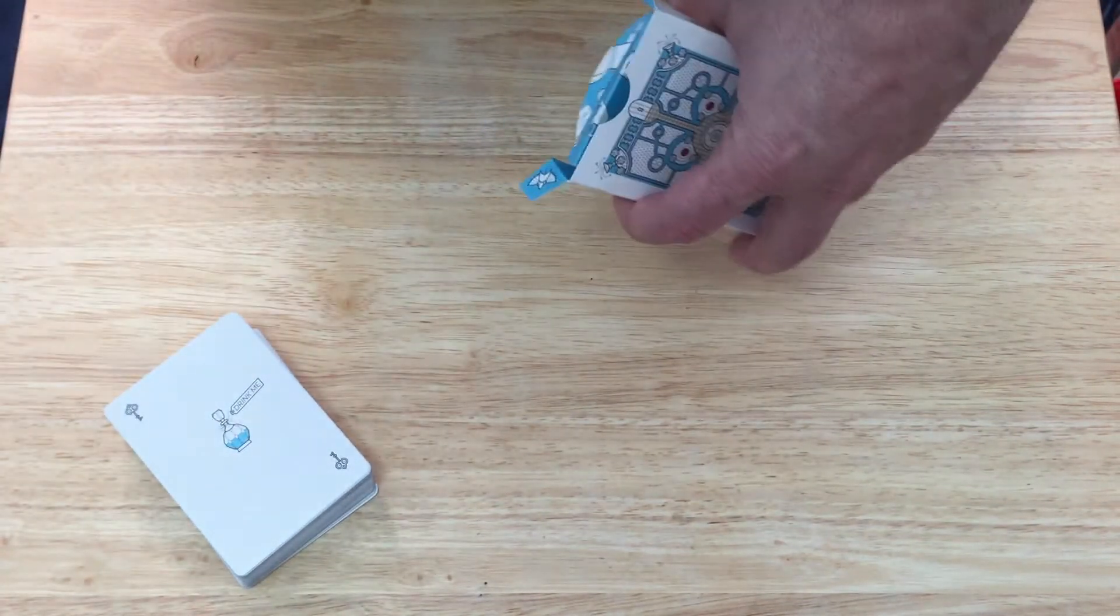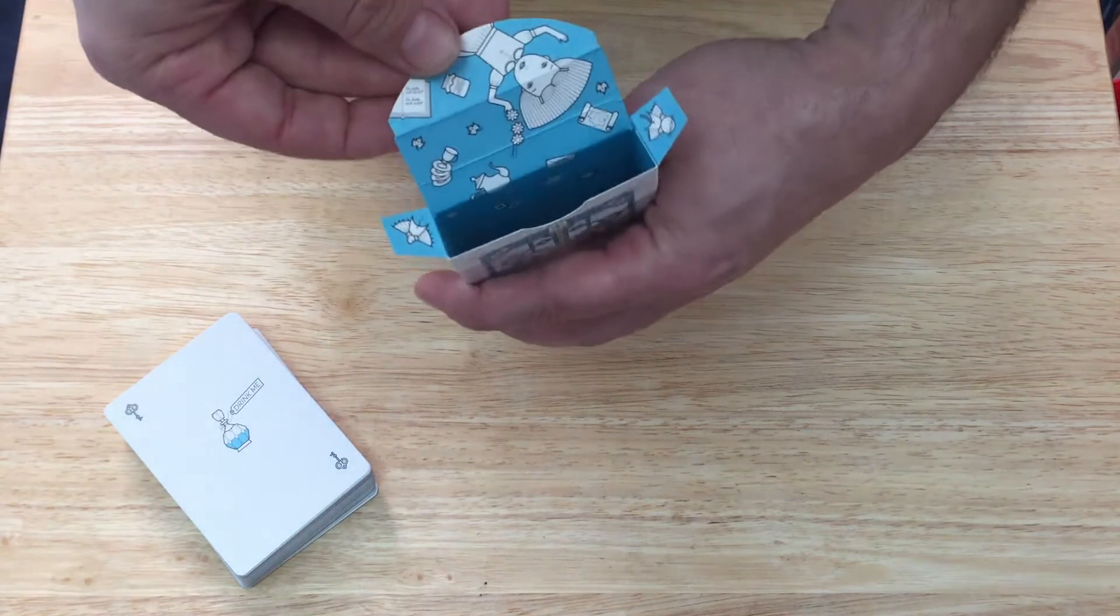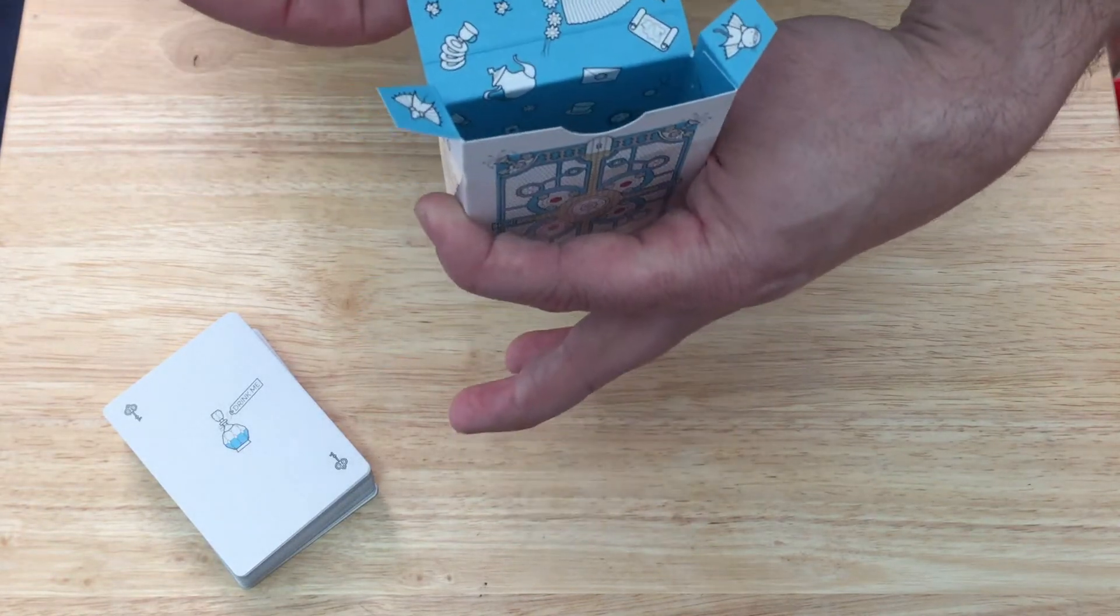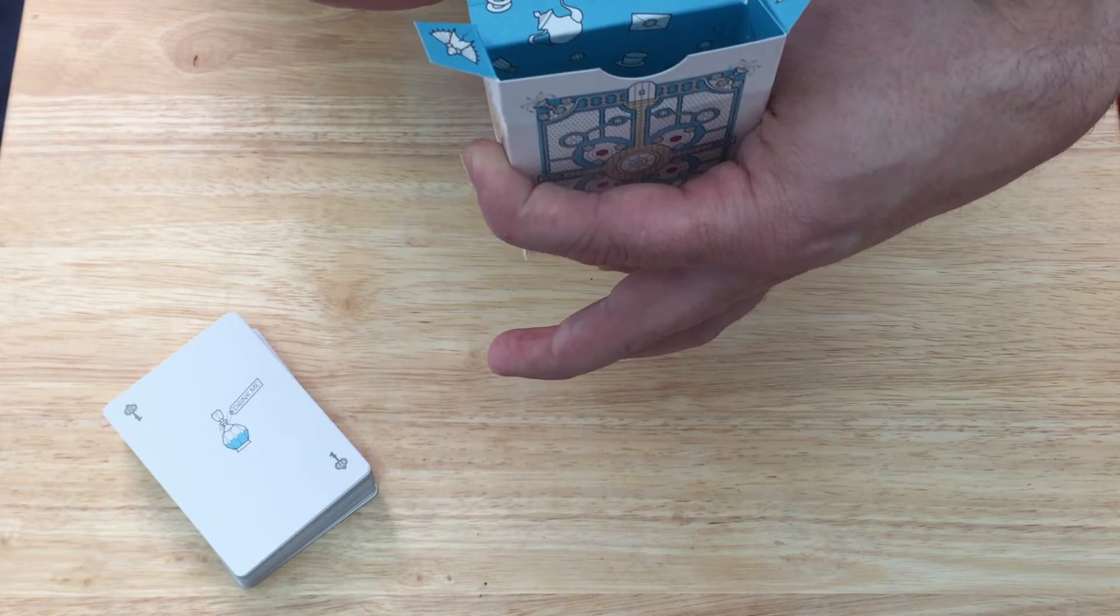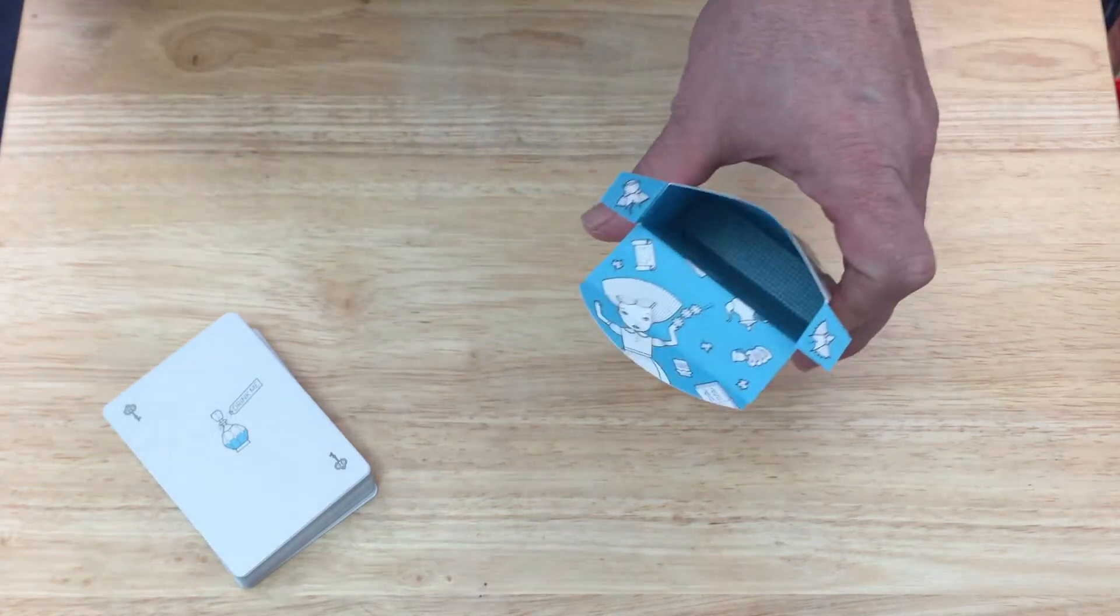The inside of the tuck case features Alice facing the rabbit's hole. You see her upside down facing the rabbit's hole, all sorts of stuff going on in there, beautifully designed. It's even got this repetitive pattern right at the very bottom which you probably can't see unfortunately due to the lighting.